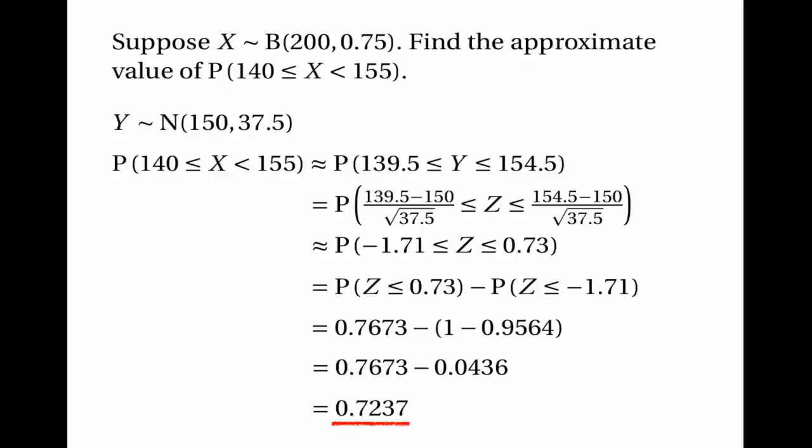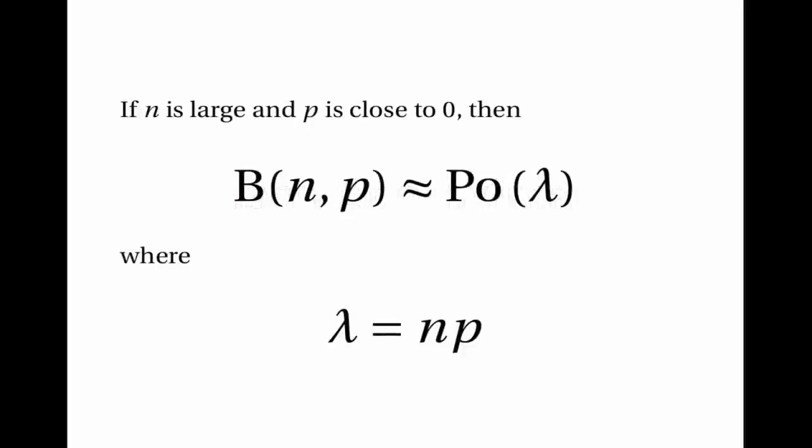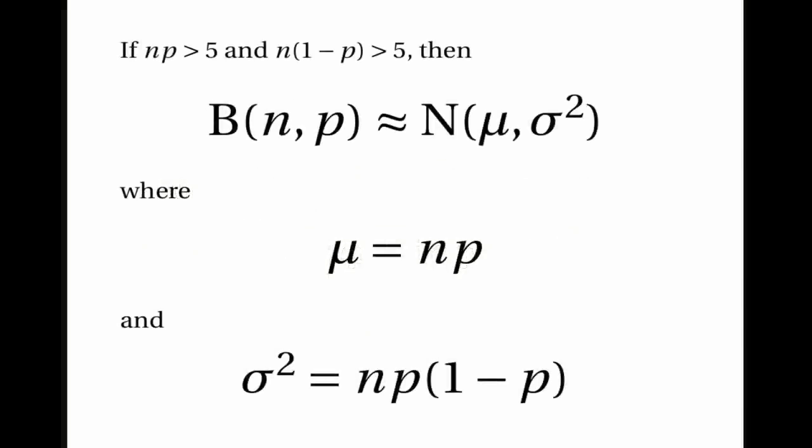That's nearly the end of the video. A quick reminder: you've already learned about the Poisson approximation to the binomial, which works when n is large and p is close to 0, giving a Poisson distribution with lambda = np. The normal approximation works when np > 5 and n(1-p) > 5, giving a normal distribution with mean mu = np and variance sigma squared = np(1-p). I hope you found this video useful — thank you for watching.